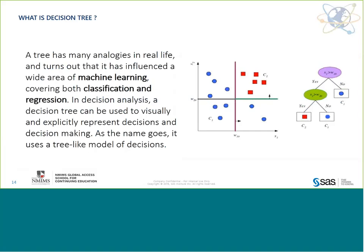A decision tree gets its name from the general structure of a tree. In a two-dimensional example with variables X1 (income) and X2 (age) and two customer classes, the algorithm finds cutoffs on X1 and X2 that separate one group from the other. For example, the rule 'X1 > W10' creates a vertical line separating blue and red points, and 'X2 > W20' creates a horizontal line further differentiating them.